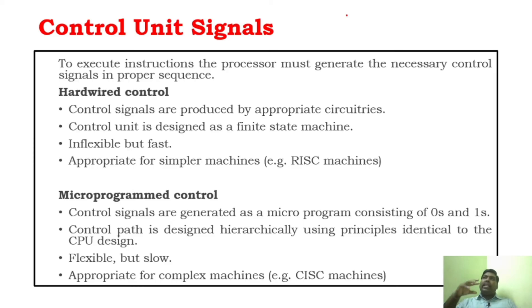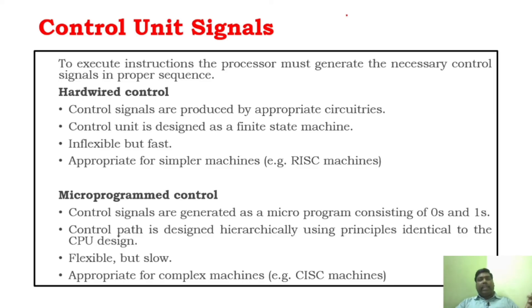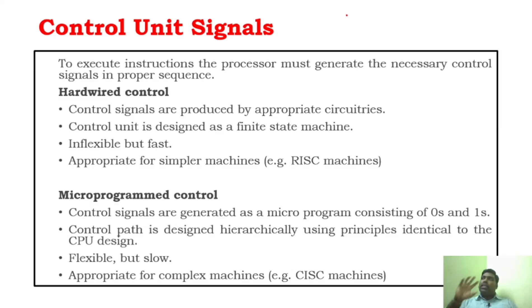How the control signal is getting generated — there are a lot of techniques to generate the control signals inside the processor. There are two important techniques: one is Hardwired Control and the other is Micro-Programmed Control. Before seeing the difference between them, you have to understand what each one is. Both Hardwired Control and Micro-Programmed Control are techniques used to generate the control signals in a proper sequence.